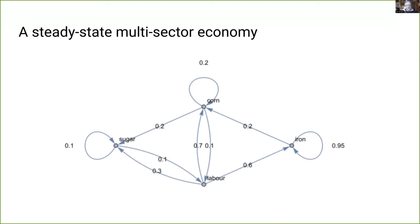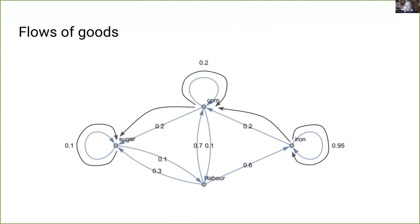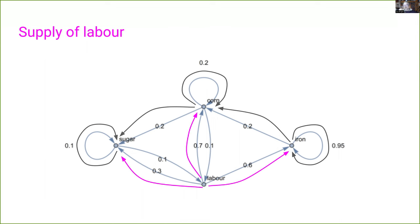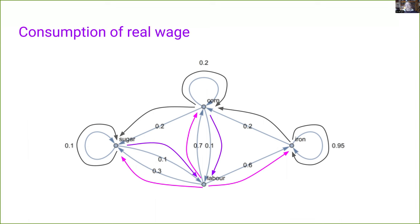This definition is important — we'll return to its significance later. Now let's consider a steady-state multi-sector economy. To keep things simple, just three sectors which produce corn, sugar, and iron. We have a worker household sector which supplies labor to production. Although this economy is in a steady state, there's a lot going on: a continual flow of goods to and from sectors of production, nothing gets made without a supply of labor, and workers are consuming commodities too.